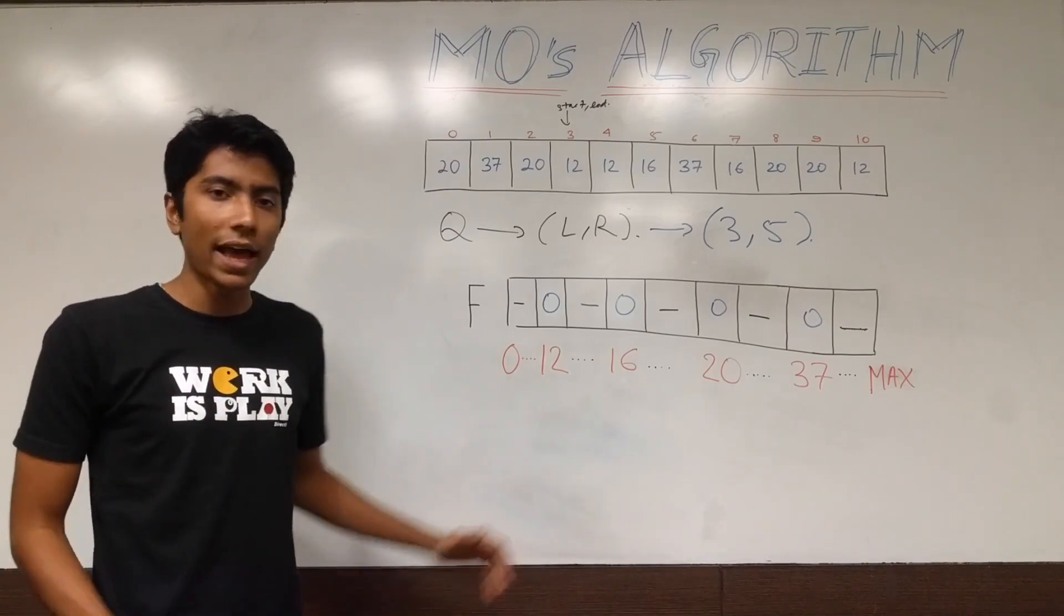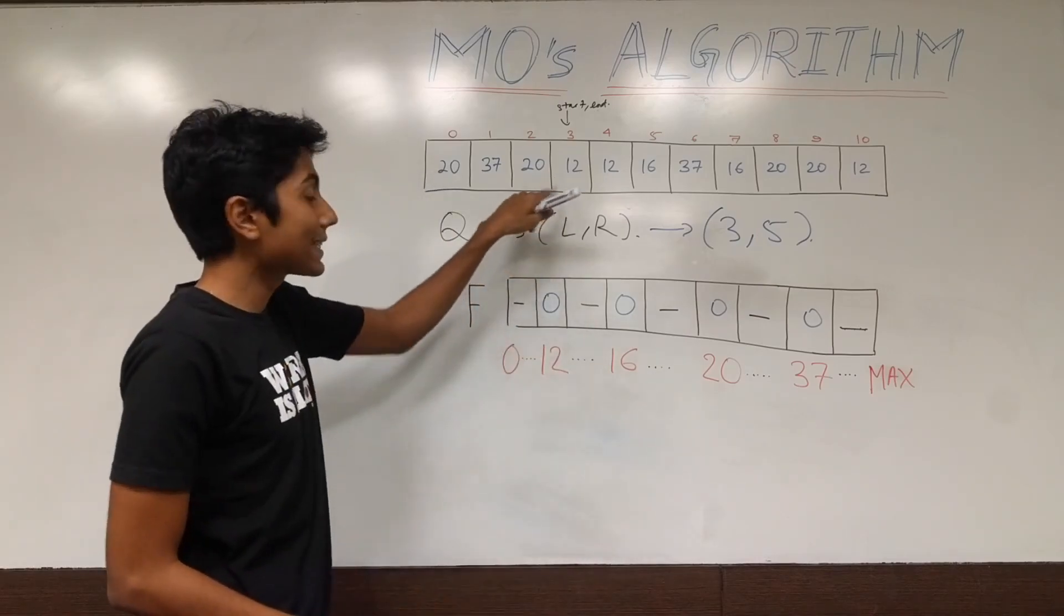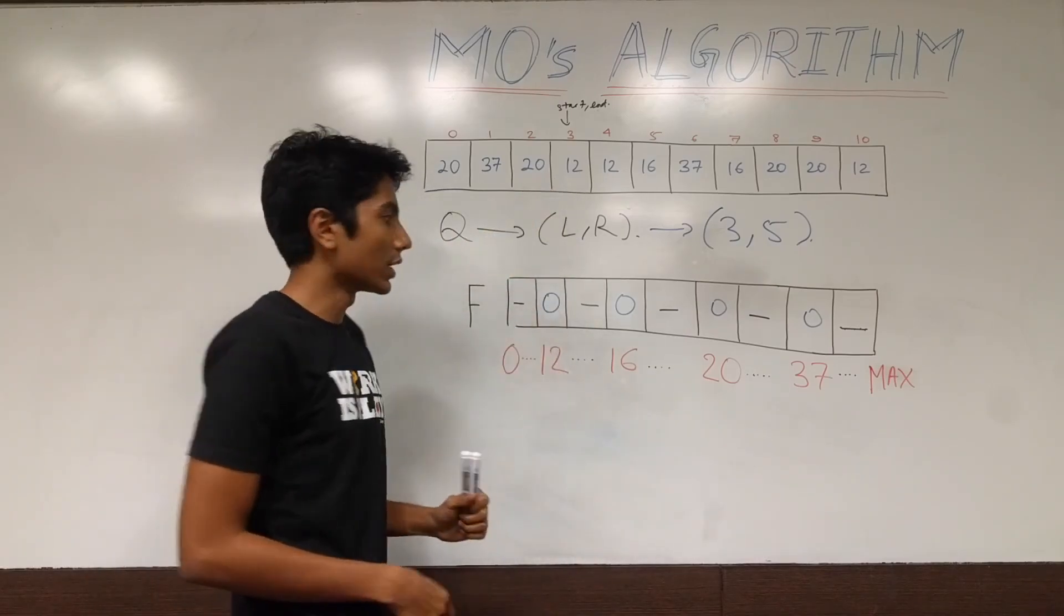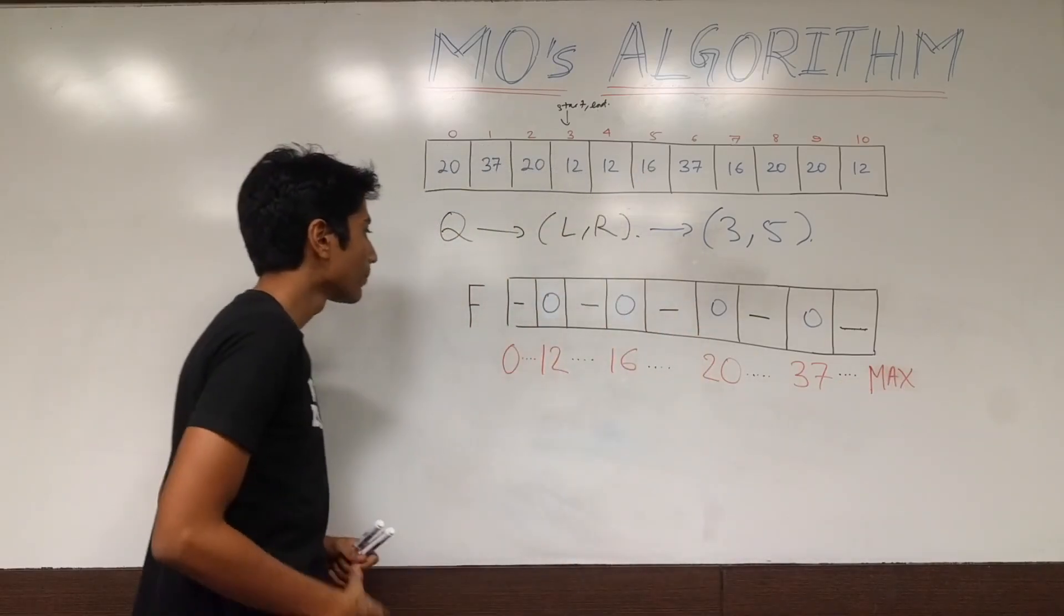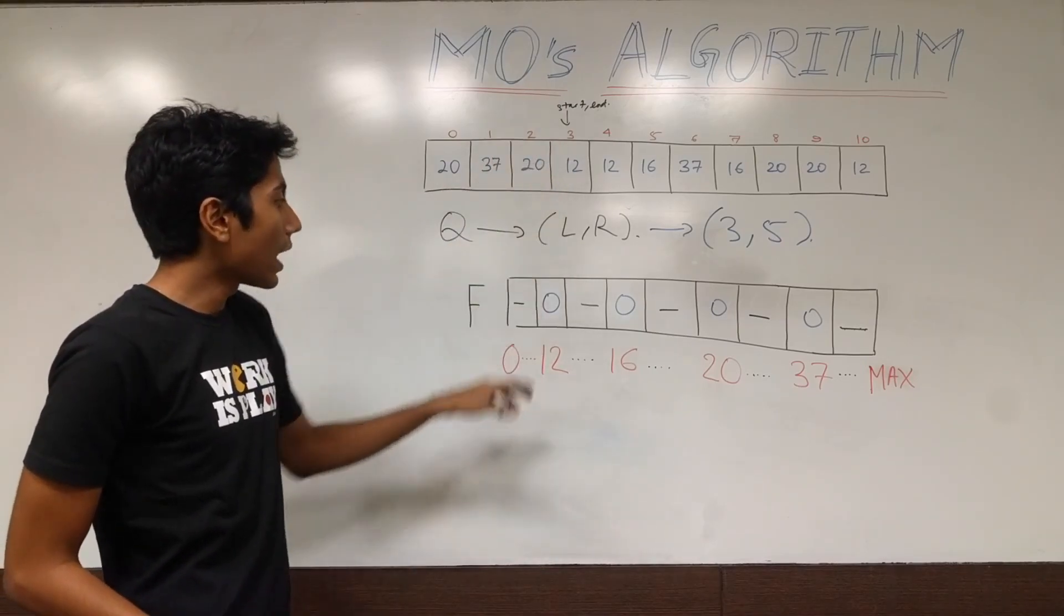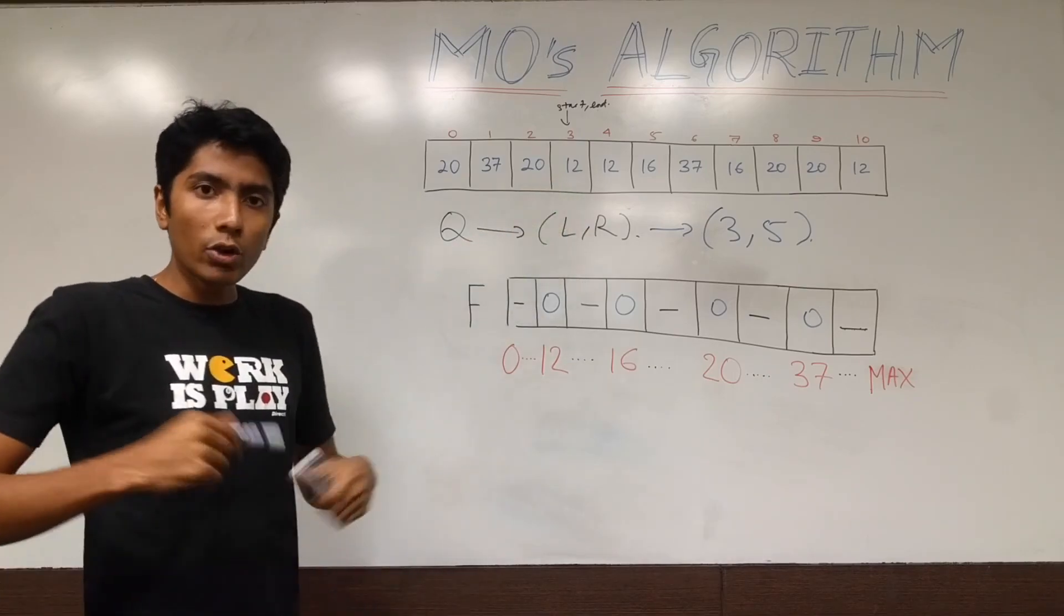This is how you're going to maintain the frequency of the arrays. You have for every possible element in this array, a corresponding frequency. So from 0 up to the maximum value that the array can have, you'll have corresponding frequencies. Start and end are pointing at index 3, which has a value 12.